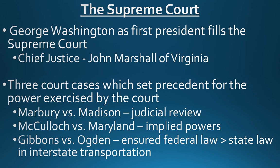The next key case is McCulloch v. Maryland, which established the idea of implied powers. The argument was that where the Constitution states Congress can make laws 'necessary and proper' to what they need to do, Marshall argued this means the government can use any method convenient for carrying out its purposes and powers, as long as it is not expressly forbidden elsewhere. Once established through judicial review, this set precedent for future interpretation. Finally, Gibbons v. Ogden ensured that federal law is seen as greater than state law, especially regarding interstate commerce and transportation.